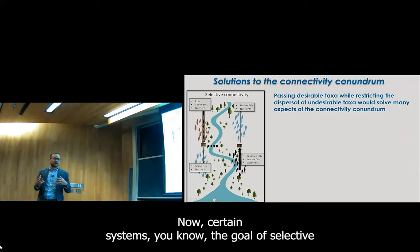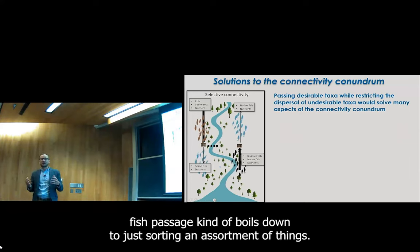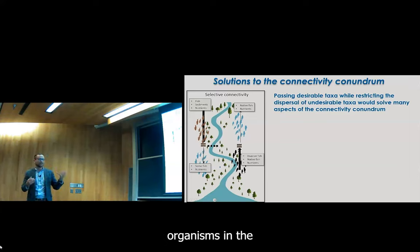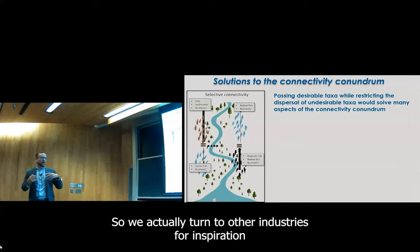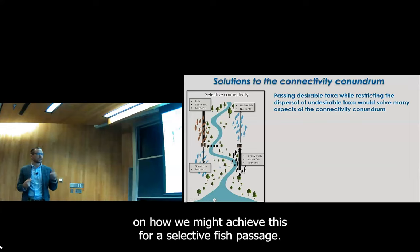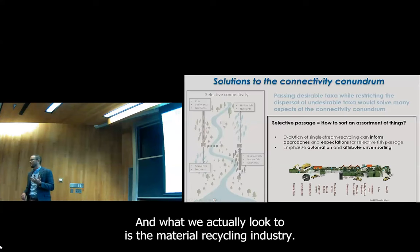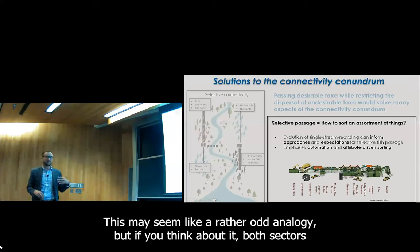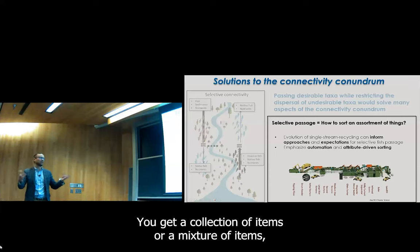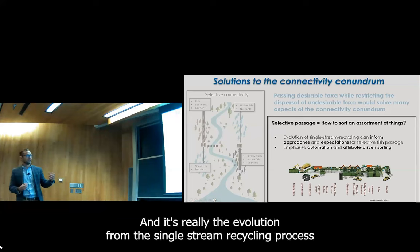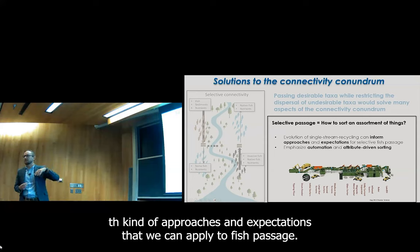What the Great Lakes Fishery Commission has started with this project is trying to develop selective fish passage tools so we can actually pass desirable species while blocking and or removing those that are undesirable. Sorting systems — the goal of selective fish passage kind of boils down to sorting an assortment of things. There aren't a lot of examples of sorting organisms in the natural world, so we actually turned to other industries for inspiration. We looked to the material recycling industry. Both sectors are trying to solve the same problem: you get a mixture of items and you want to sort out those that are desirable from those that are undesirable.